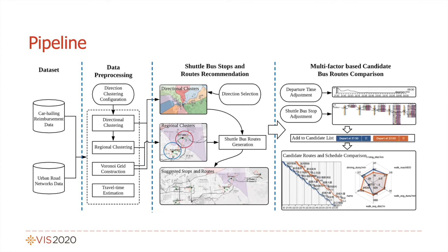Here is the system pipeline. We collect car-hiring reimbursement data and urban road network data as input. We then pre-process the data by directional and regional clustering to refine the shuttle bus stops and routes. We further refine the shuttle bus stops and routes by controlling multiple factors that may affect the traveler's experience. The appropriate routes are then added to a candidate list for comprehensive comparison, and finally we obtain the routes and schedule for one travel direction.